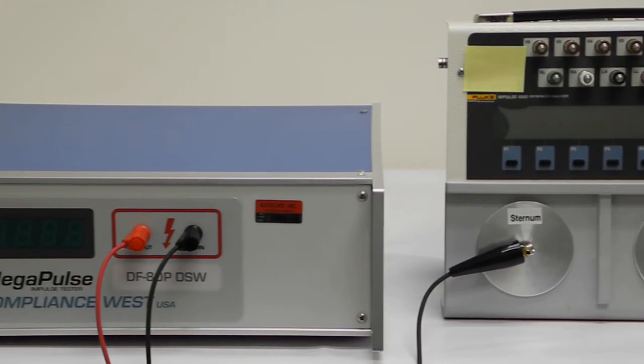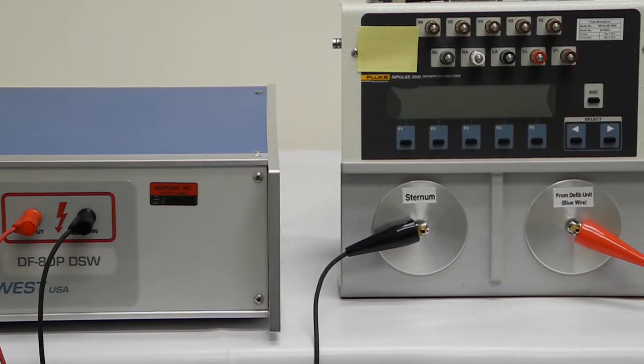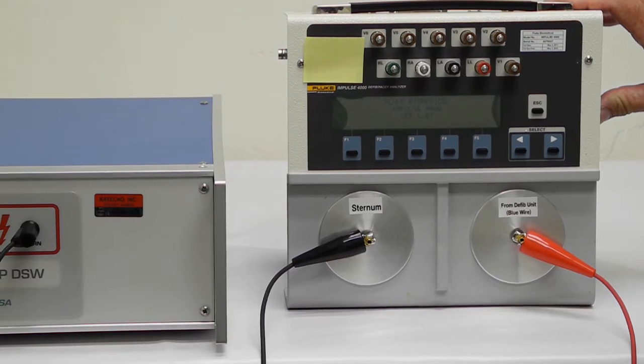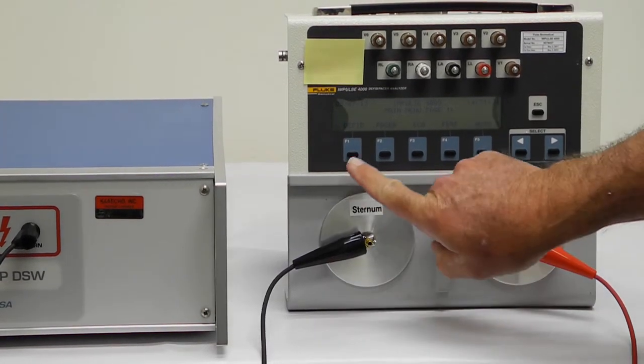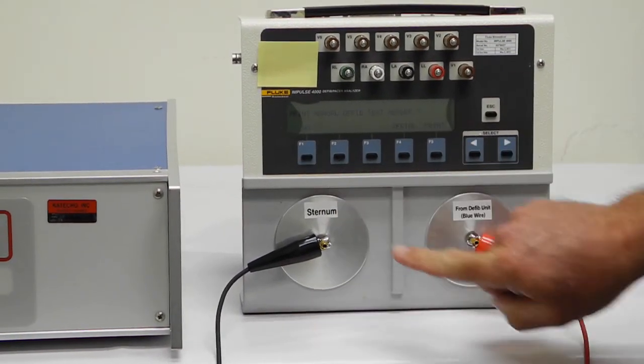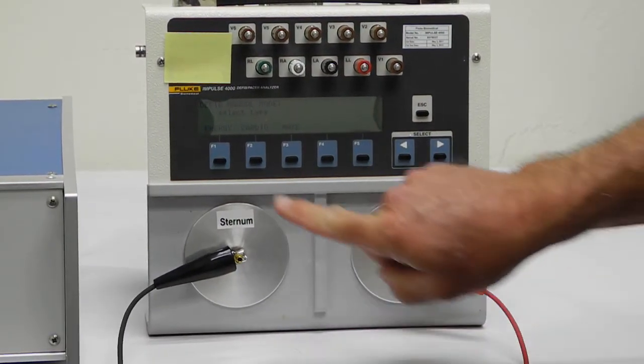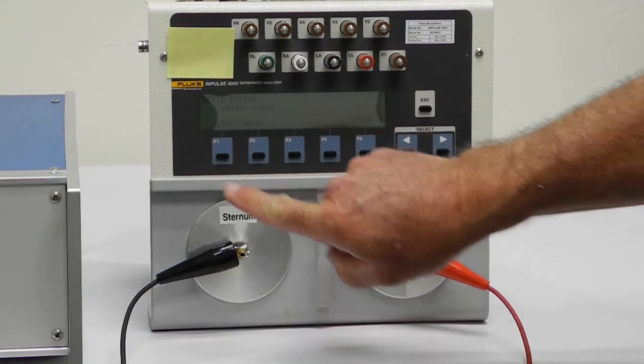The Impulse 4000 is prepared for this test by turning it on, selecting the D-Fib option. We don't want to print. Then energy and high.